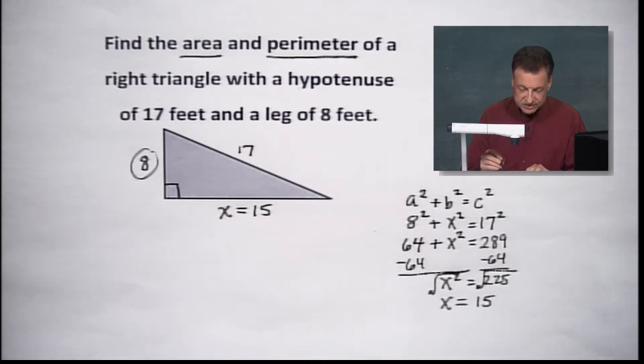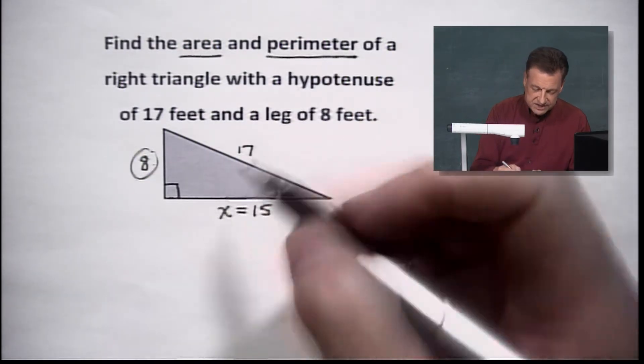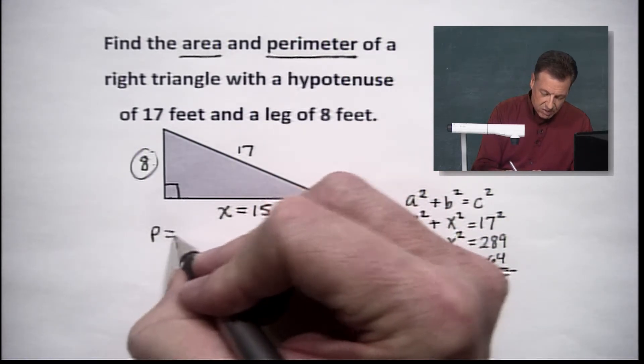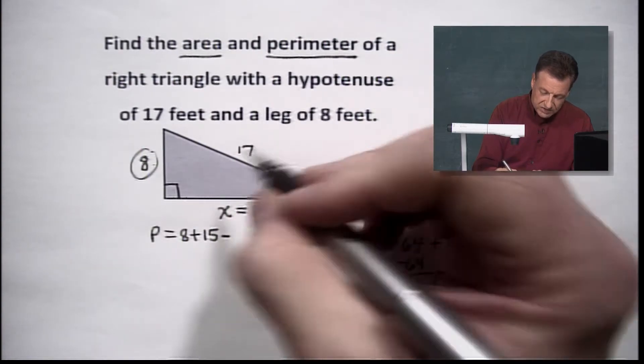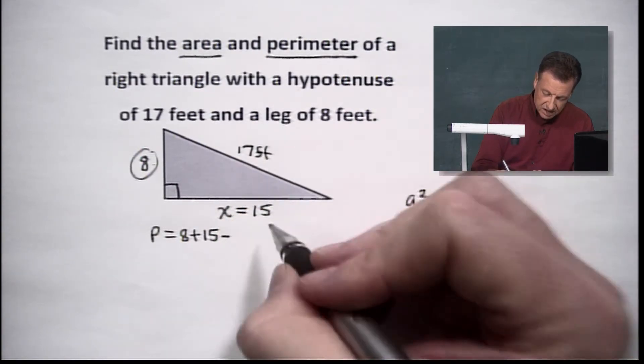Now, let's get this area and perimeter business. Perimeter is just simply add the three sides together. So that part's pretty easy. Watch me mess up. Not going to mess up. And by the way, these are all feet, right? You've got to remember that.